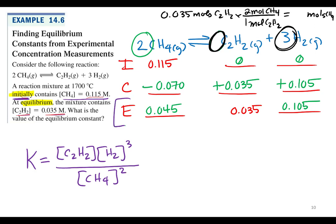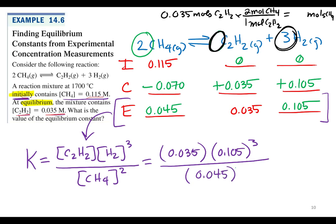Now I'm just going to take my equilibrium line and plug it in there. So C2H2 0.035 times hydrogen which is 0.105 cubed all over CH4 which is 0.045 squared.